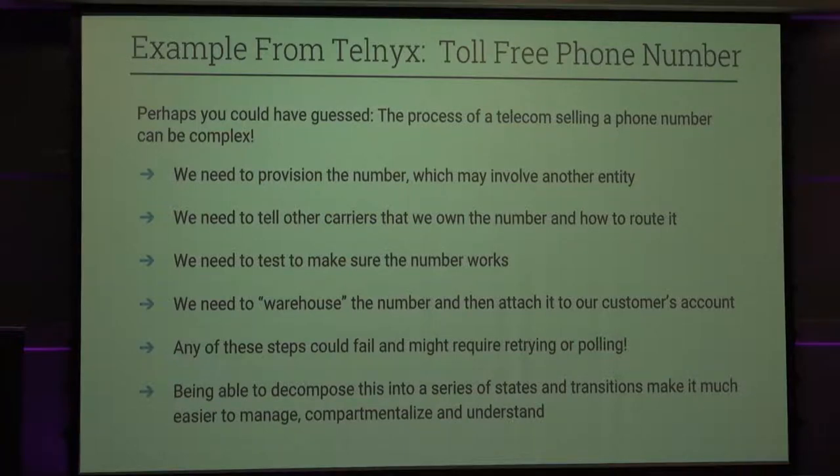An example with Telnyx: sometimes the phone numbers that people buy don't come from us — we have to partner with another carrier. The process of purchasing a telephone number can get really complex. We have to check if a number is available, buy it, notify other telecoms, test it, and give it to a user. Each of these steps could have edge cases — sometimes they fail, sometimes we need to retry, sometimes we get unexpected responses from downstream partners. Modeling this as a finite state machine allows us to focus on each chunk separately and handle edge cases carefully.